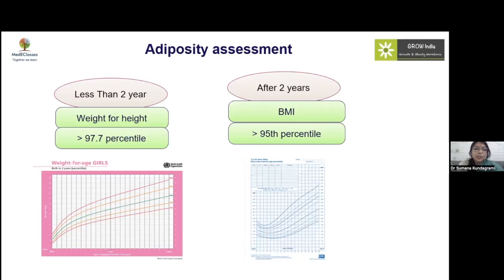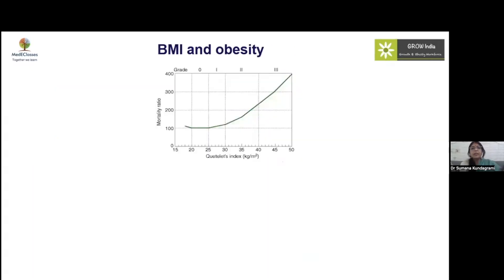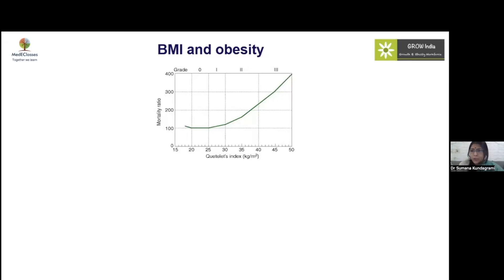The WHO charts apply for under-twos and CDC charts for over-twos, as seen in the following charts. The BMI and mortality relationship shows a J-shaped distribution, as visible in this chart. This raises the question of where these cutoffs actually come from — and there have been many changes in the evolution of these cutoffs.